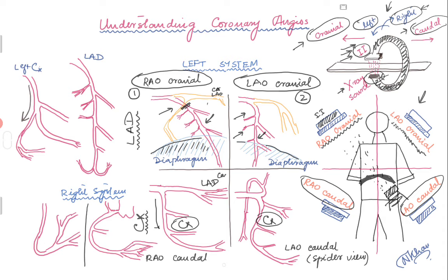In the RAO cranial view, the LAD goes down in the middle of the screen with diagonal branches on the right side and septal perforators. In the LAO cranial view, the LAD comes straight down — this view opens up the diagonal branches, making it the best view to assess ostial disease in the diagonals. The RAO cranial view is good for the body of the LAD, but the diagonals may hide behind the LAD and an ostial lesion could be missed.